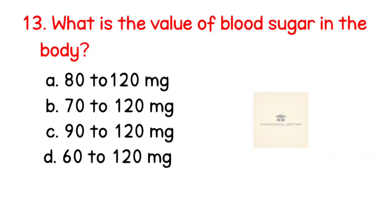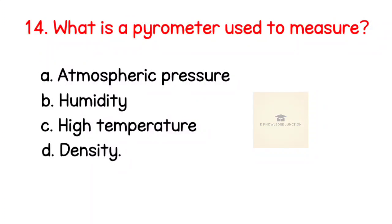What is the value of blood sugar in the body? Right answer is 80 to 120 mg. What is a pyrometer used to measure? Right answer is high temperature.